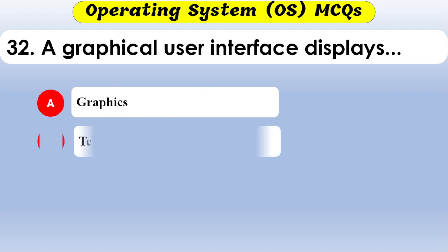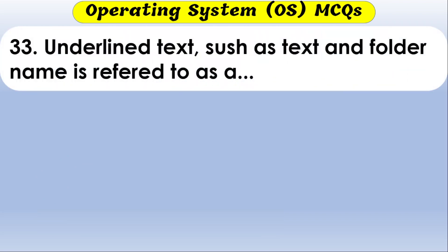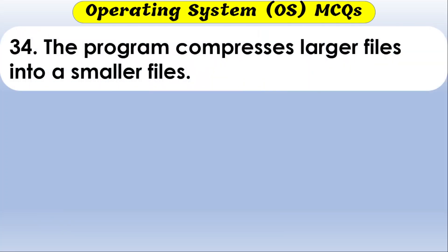A graphical user interface displays — the options are graphics, text, or both A and B. The correct option is both A and B. Underlined text such as text and folder names also indicates hyperlinks.